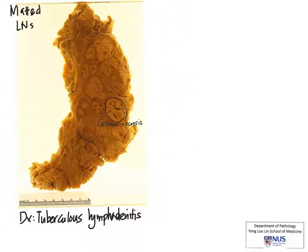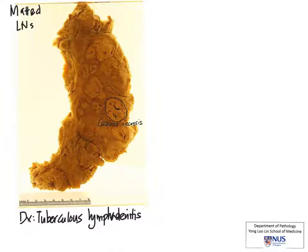How do we confirm that this is indeed tuberculosis lymphadenitis clinically? It's important to take a clinical history of symptoms such as fever, night sweats, loss of weight, and past history of TB. It would also be very important to sample the tissue to send for pathology examination under the microscope as well as microbiology examination. So what will the pathologist see?